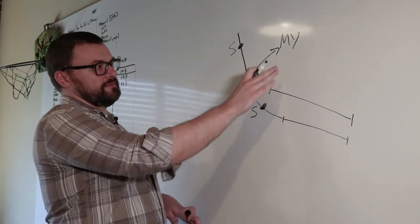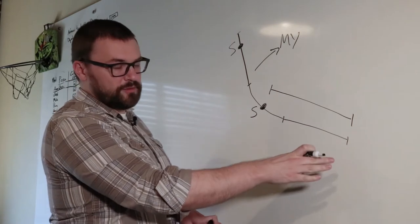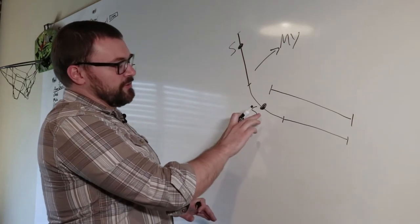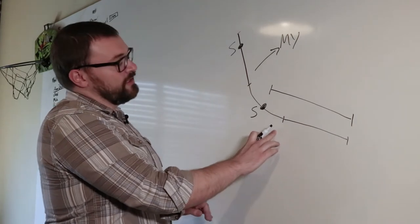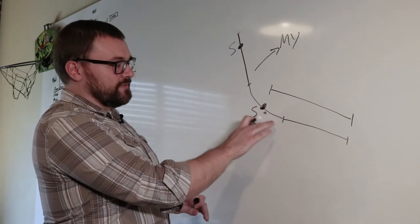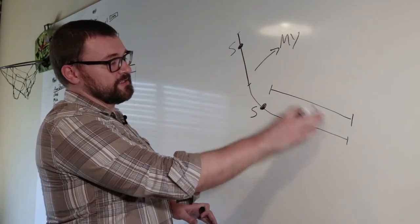Then if we take your motor yield, apply it over here to this part of the well. We also know your slide unseen, which is this part of the slide that's ahead of the survey sensor. We know the tool face of this slide. And we know the distance from your survey sensor to the bit.